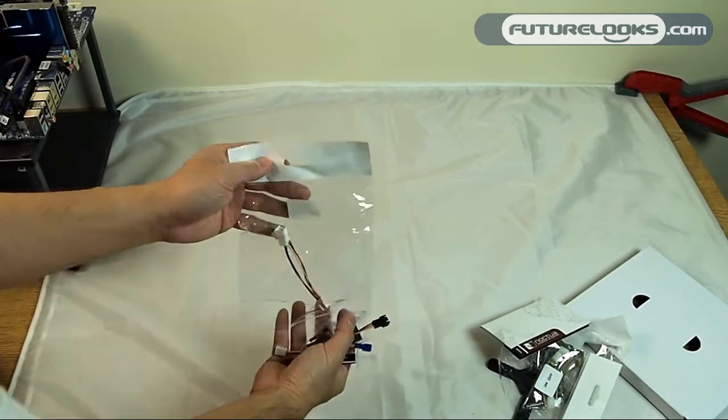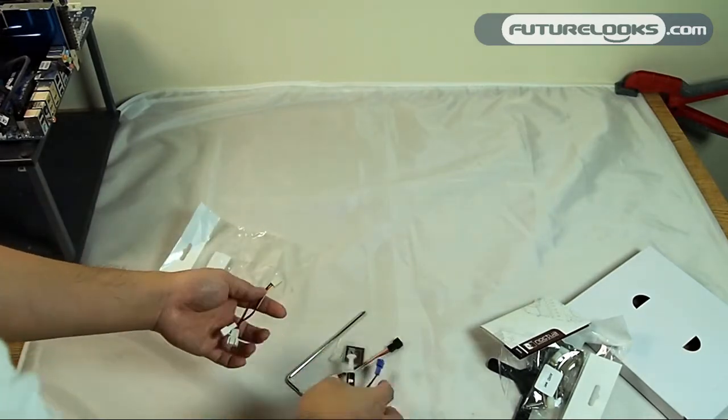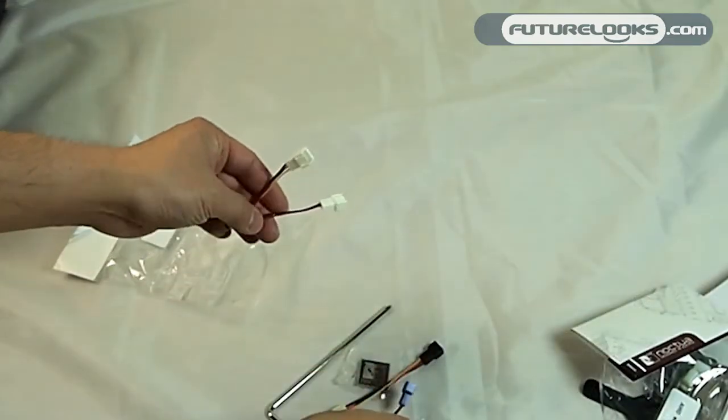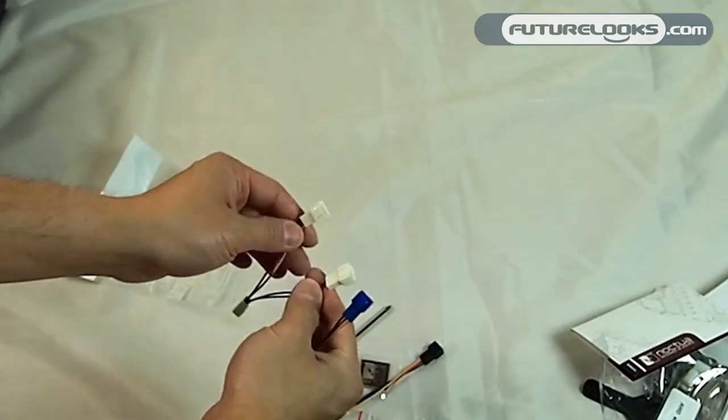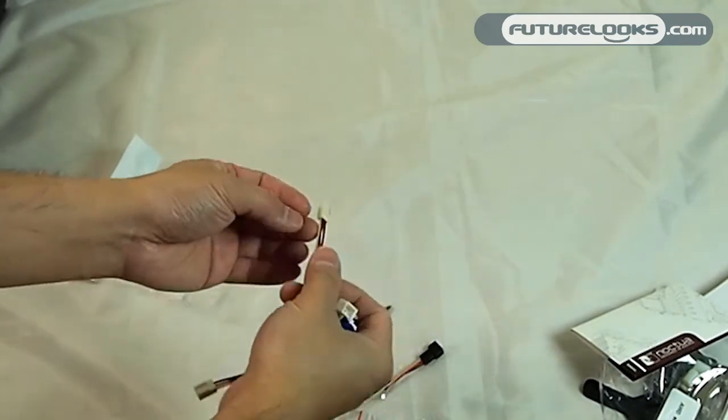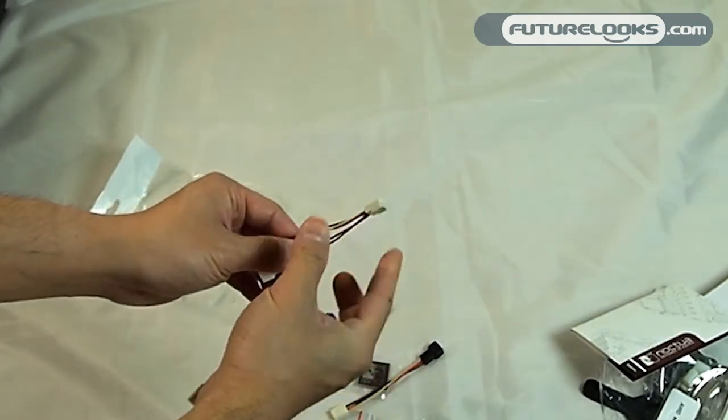What do we have here? We have some fan splitters here. And this allows you to connect the two fan connectors that are on the CPU cooler itself and turn it into one single connector for your motherboard.